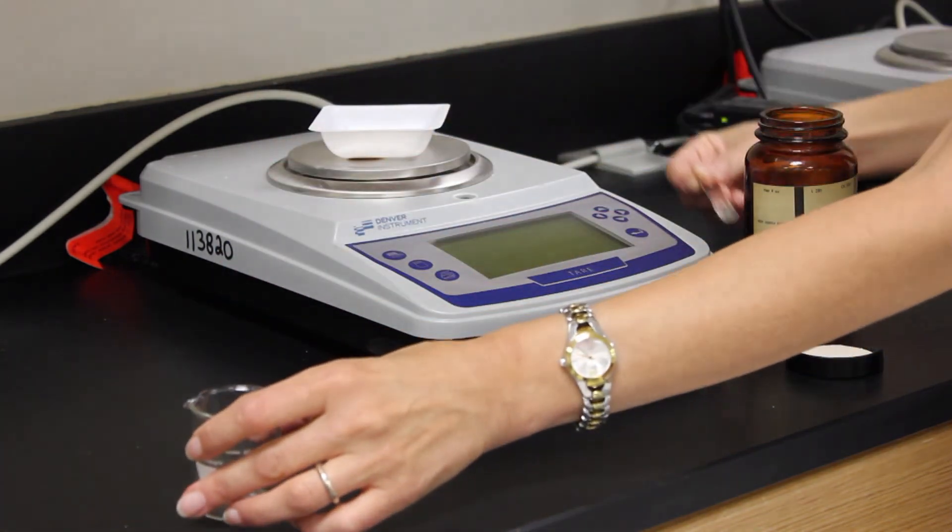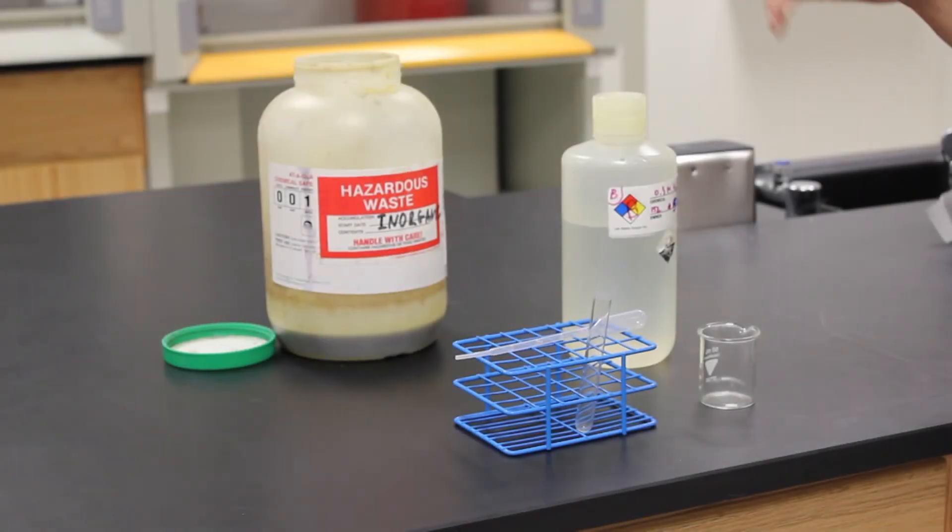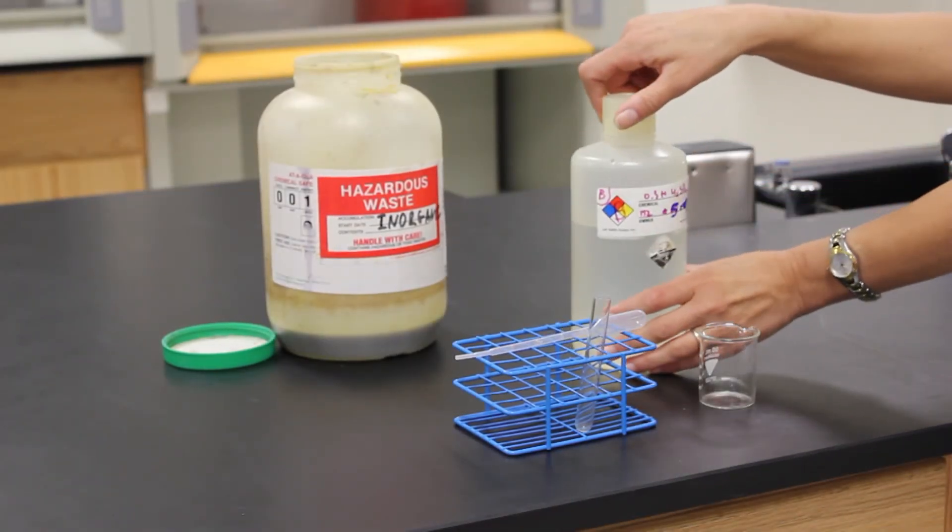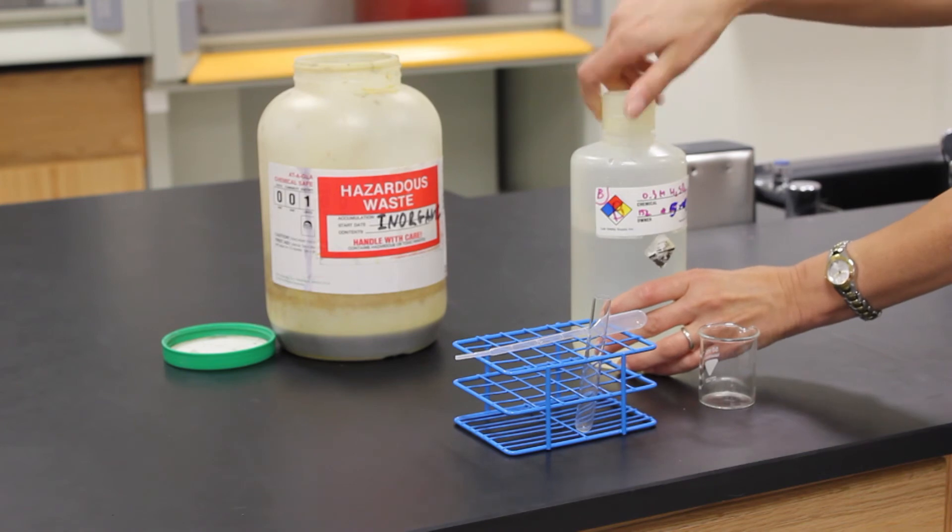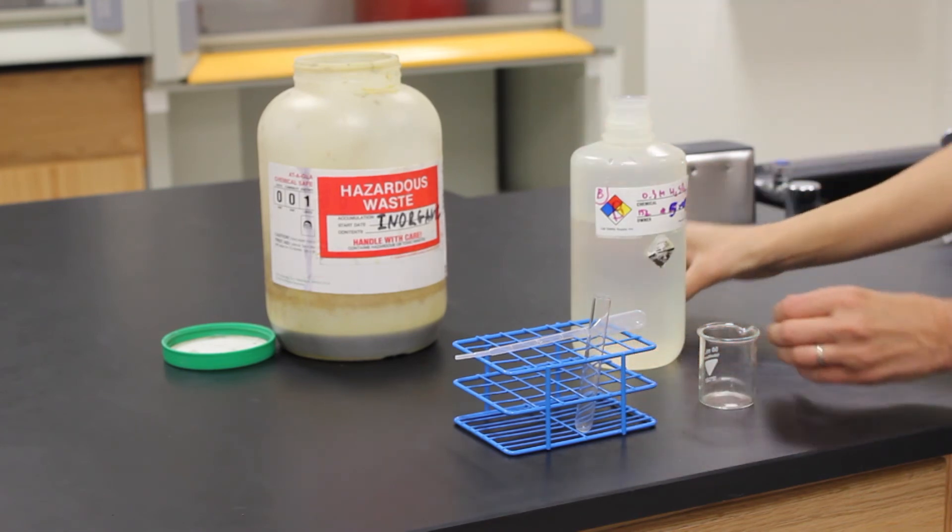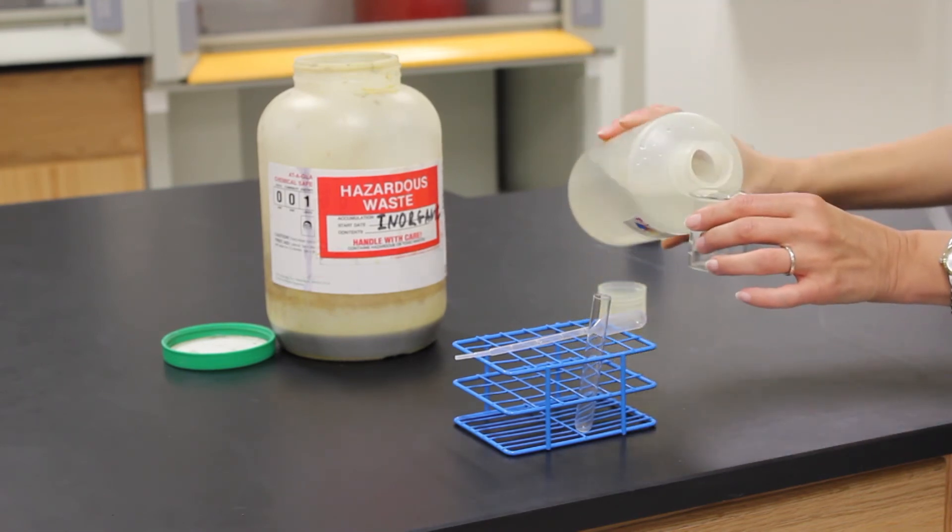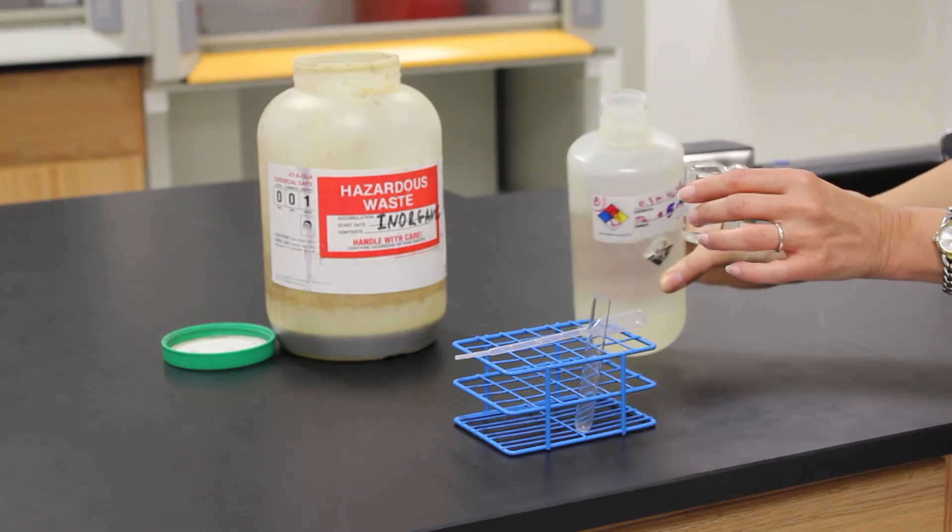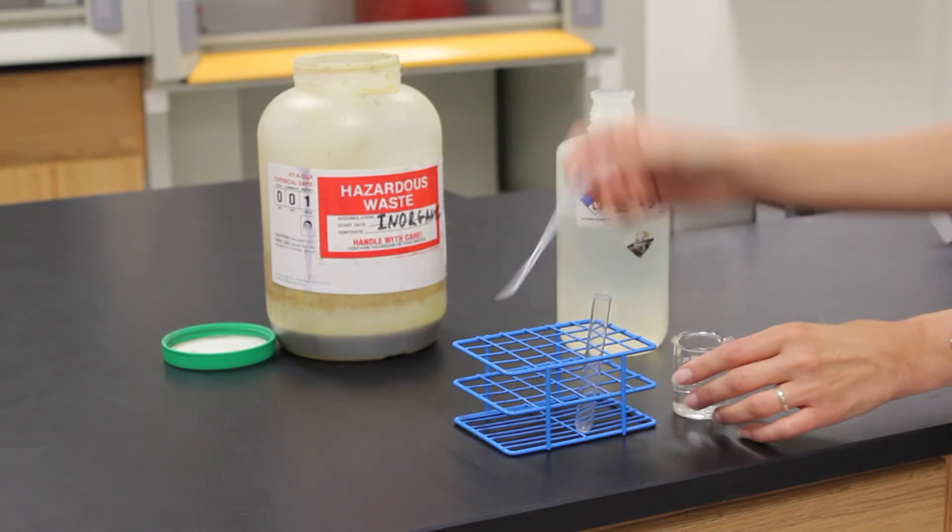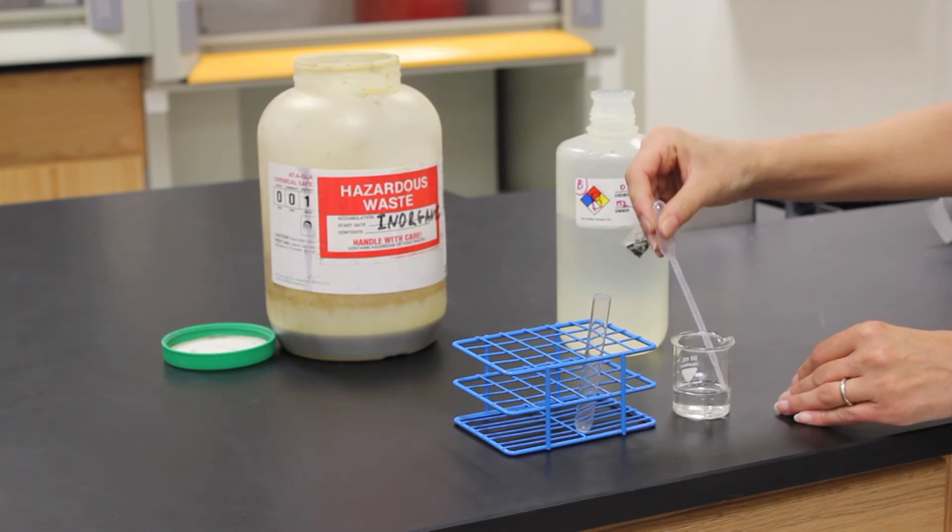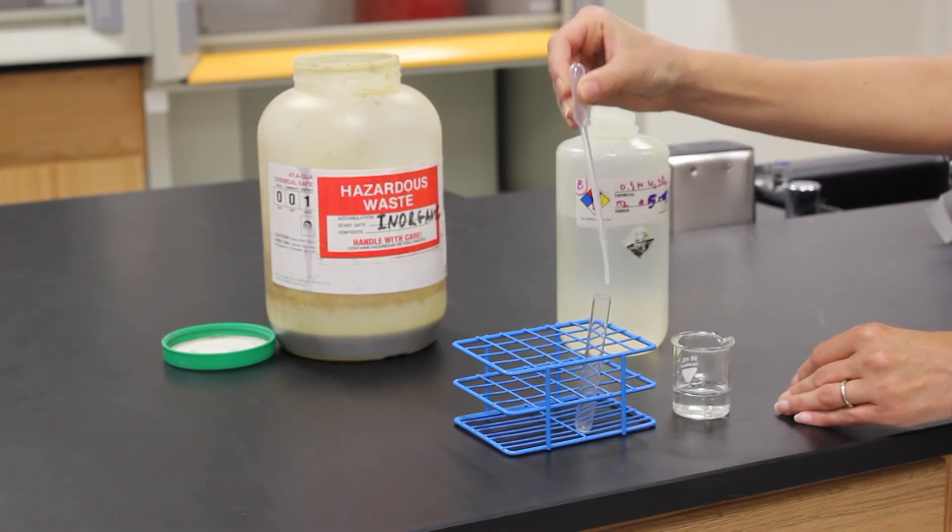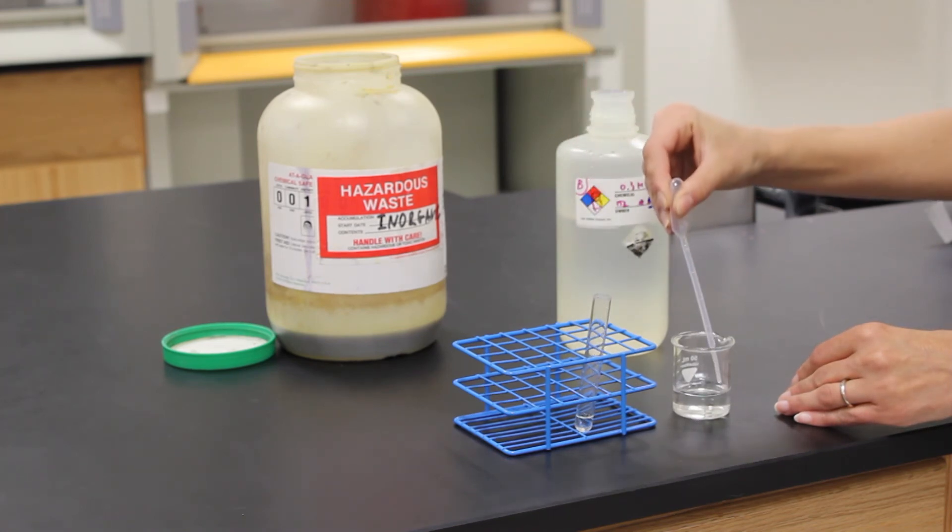Obtaining liquids is much the same. Pour a small amount of the liquid into a small beaker or other appropriately sized container. Use a pipette to transfer the amount of liquid you need.